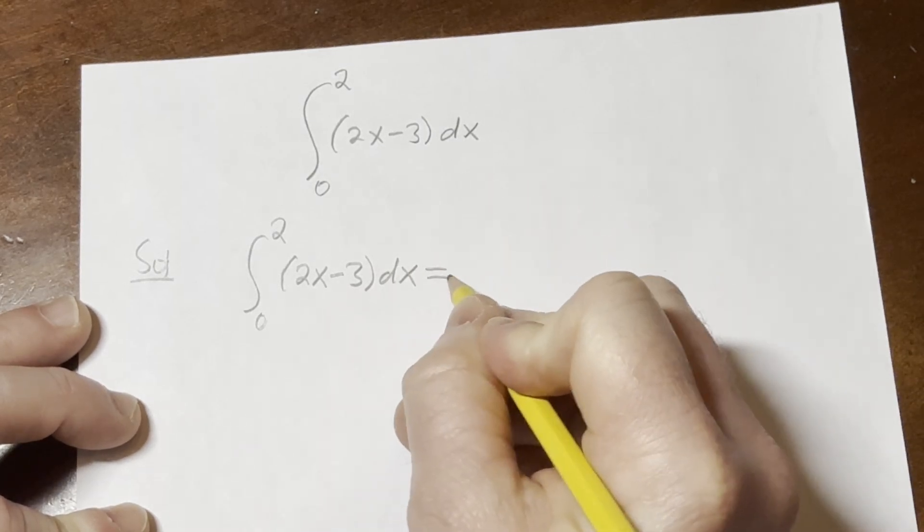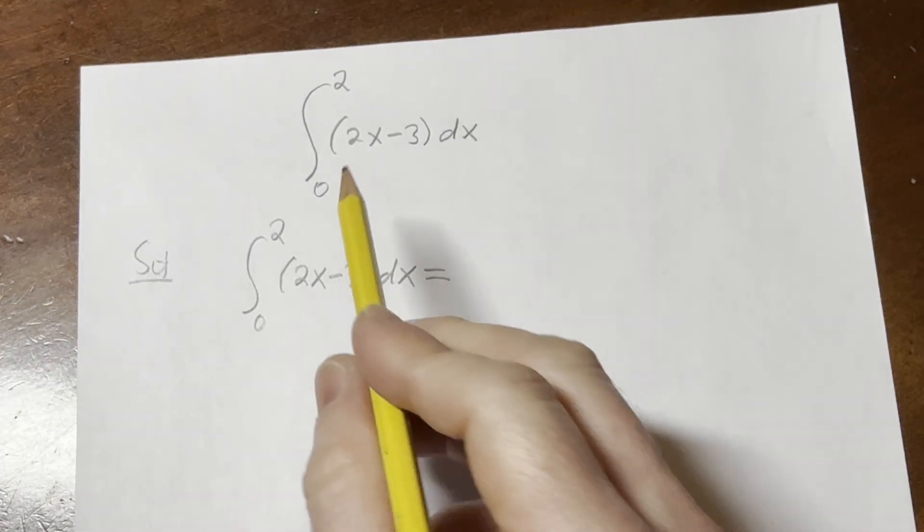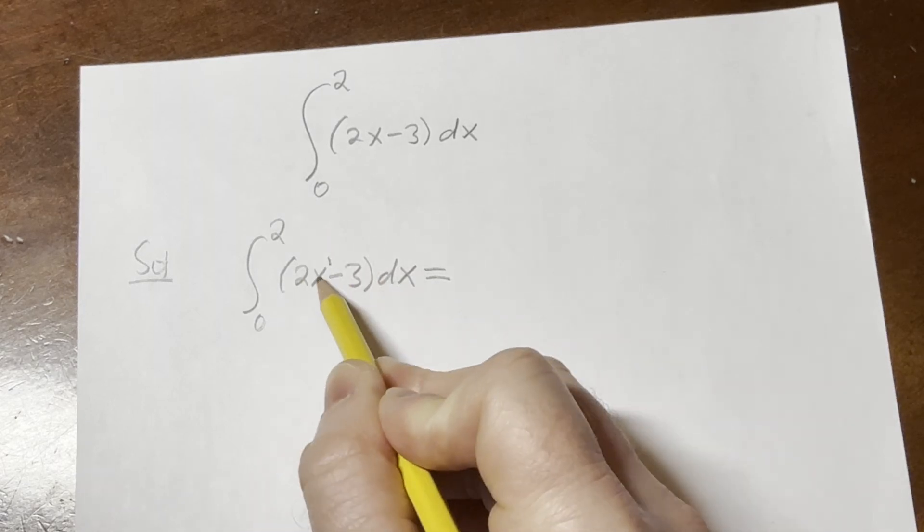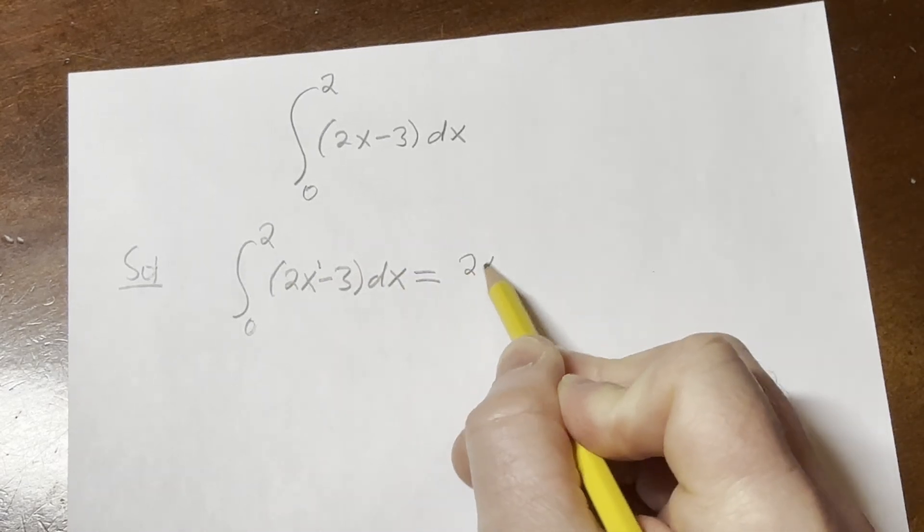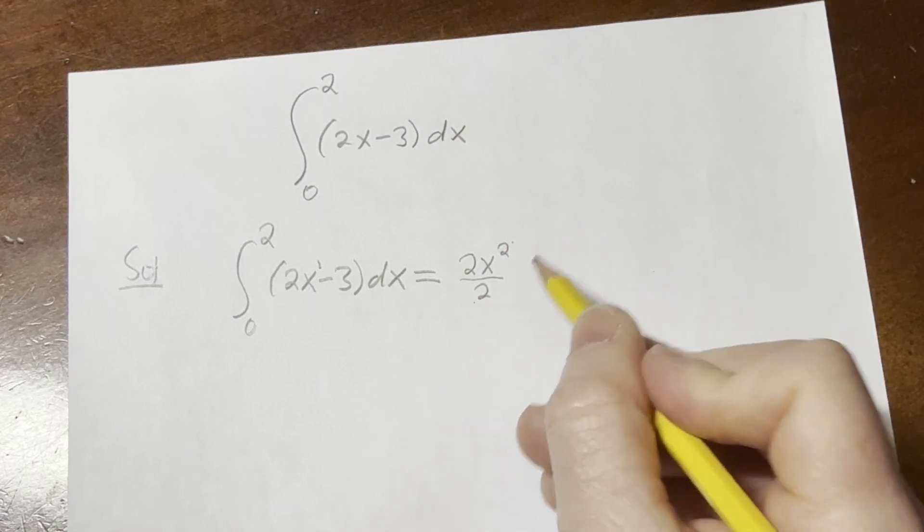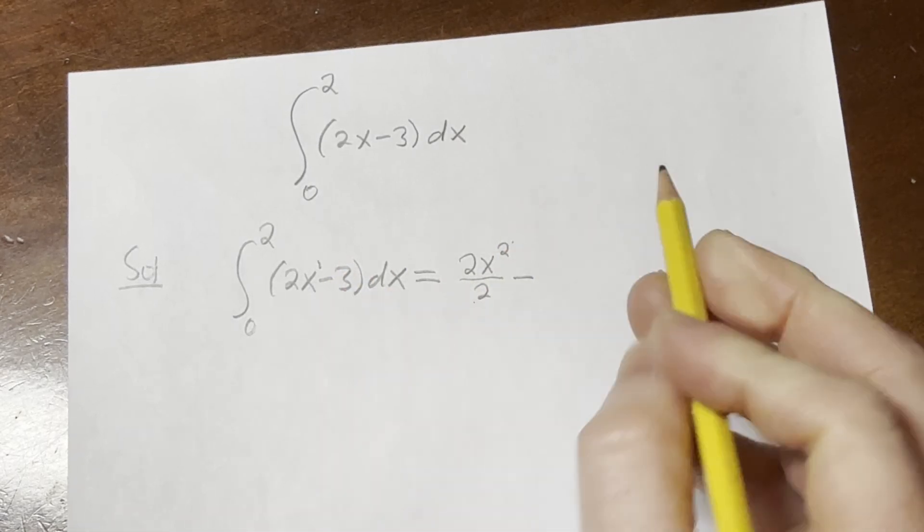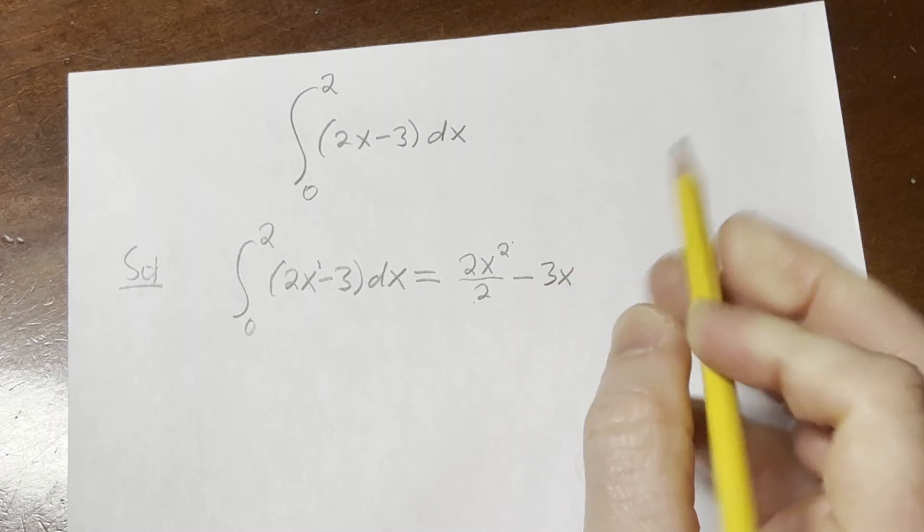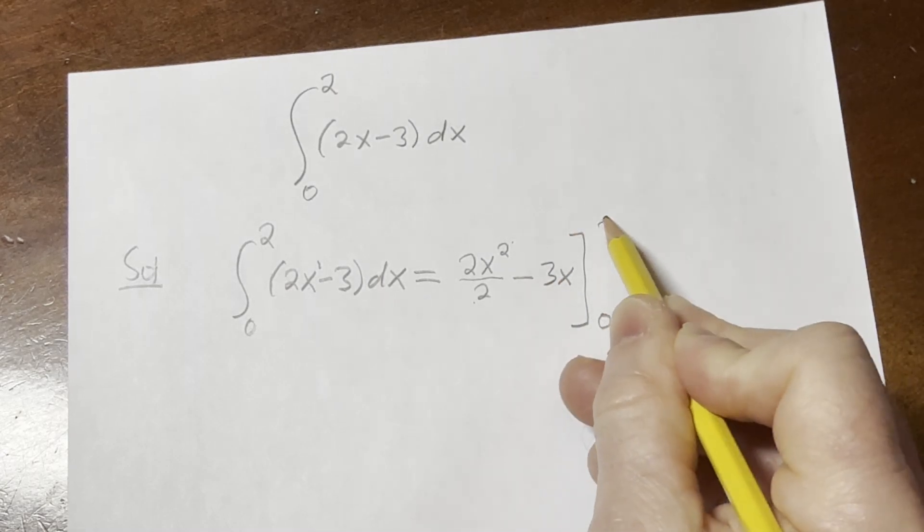All right, so this is equal to... now what we do is we basically just integrate each term. There's a 1 here, so we can apply the power rule to the x. So it'll be 2x squared over 2, because you add 1 and divide by the result, minus, and then to integrate 3, you just attach an x to it. And you can put a bracket and then a 0 and a 2.